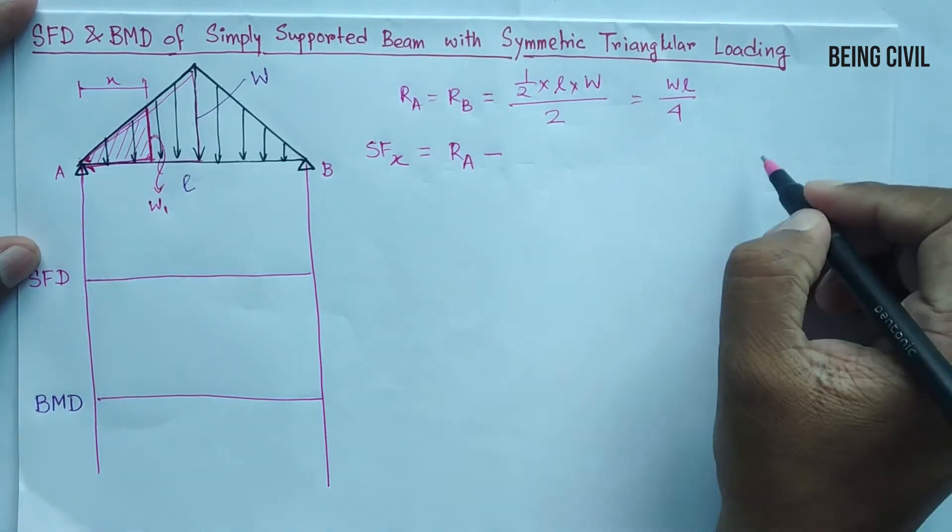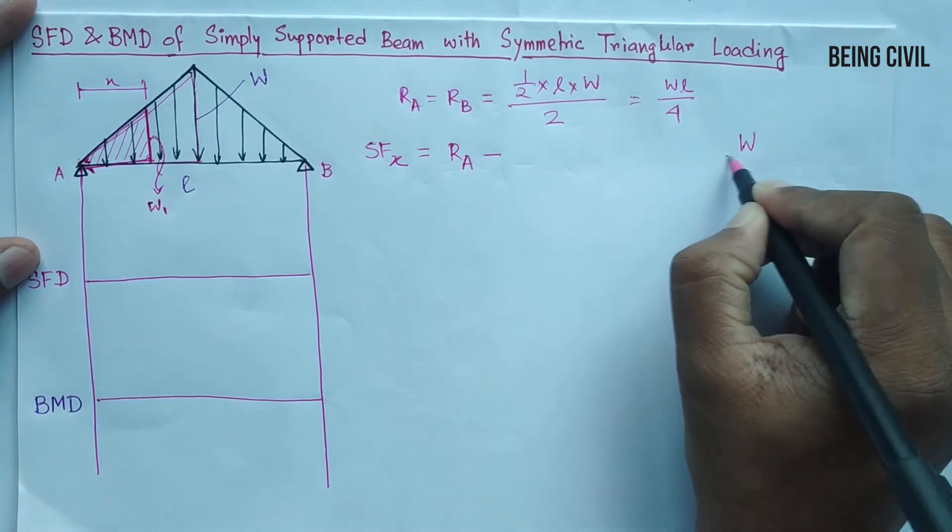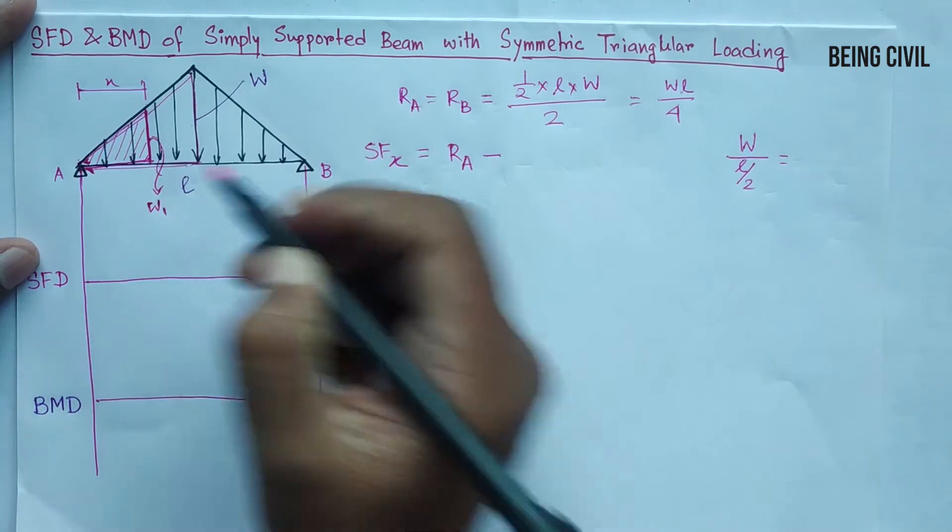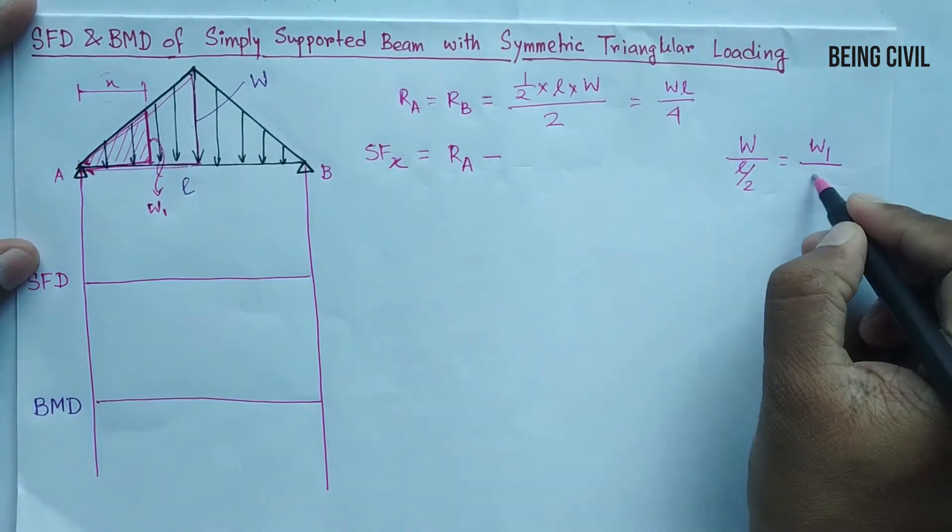This triangle and this triangle are similar triangles, so from the similar triangle rule you can calculate this height. So W by base is here L by 2 equal to height of this triangle which is W1 by base which is x.